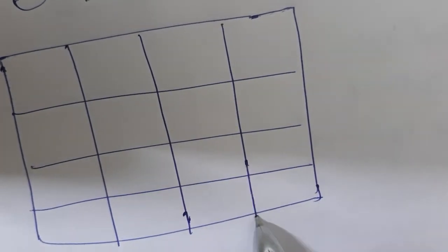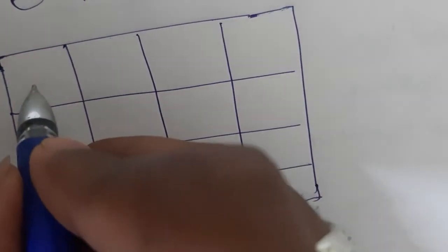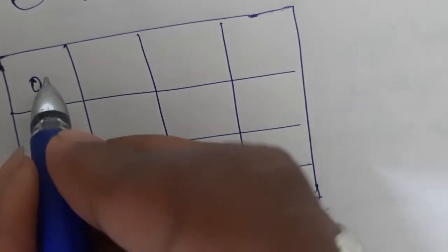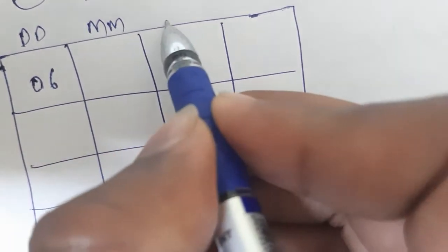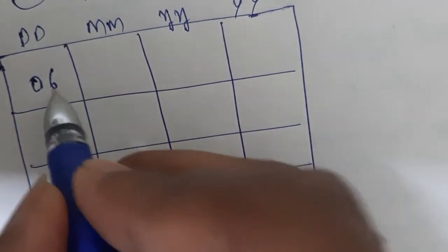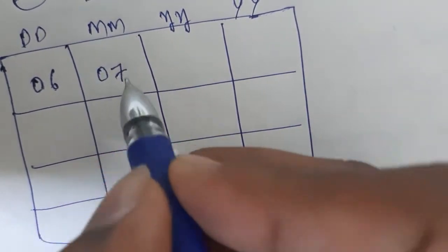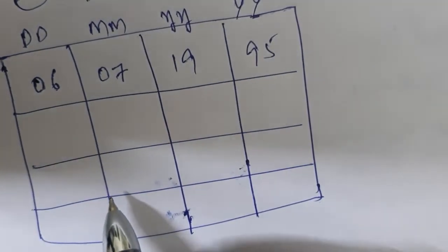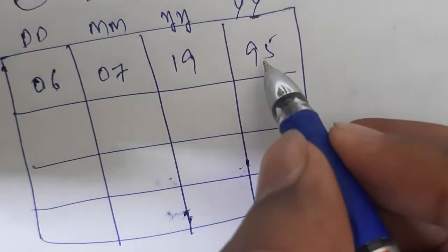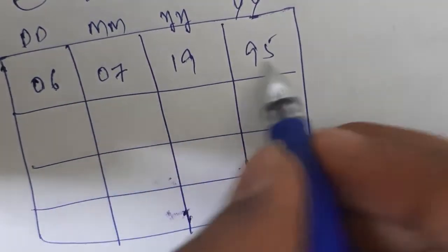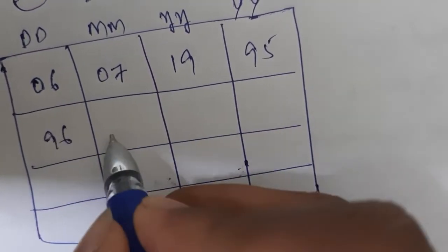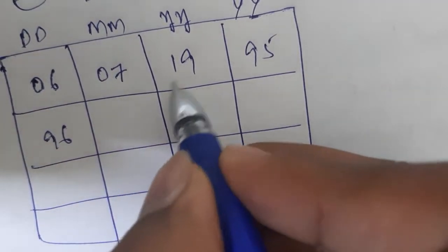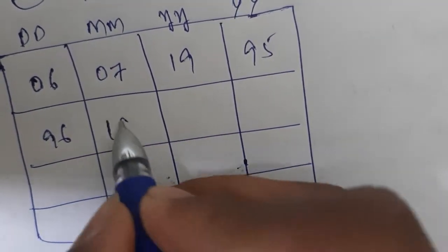Let us consider a birthday: the date here, month here, and year here. For example, 6th July 1995. So we place 95 in one cell, then add 1 to get one value and subtract 1 to get another.